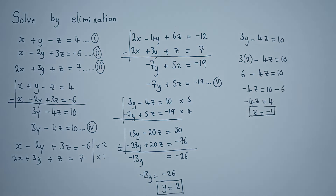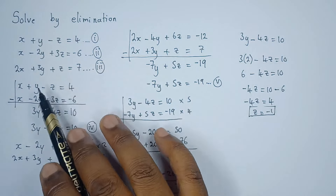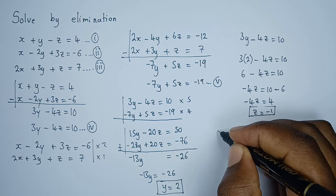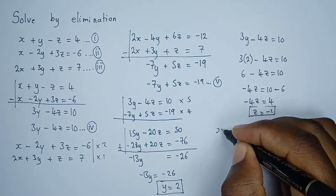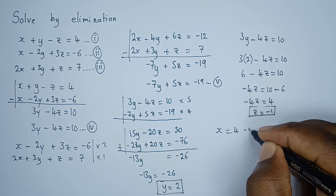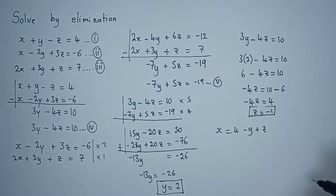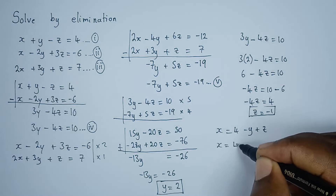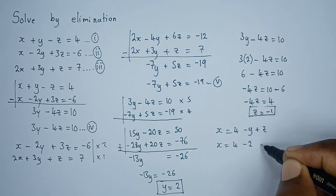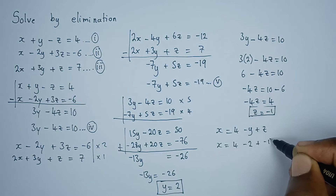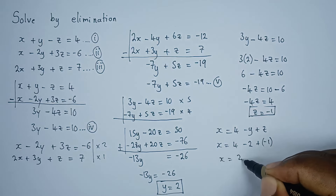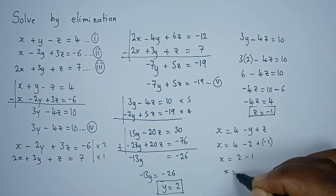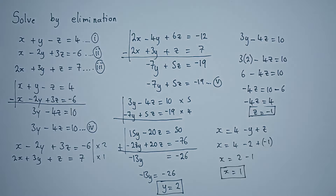To find x we use equation one. Making x the subject: x equals four minus y plus z. Substituting y equals two and z equals negative one: x equals four minus two plus negative one, which gives x equals one. So our solution is x equals one, y equals two, z equals negative one. That's how we solve this system by elimination. Thank you very much.